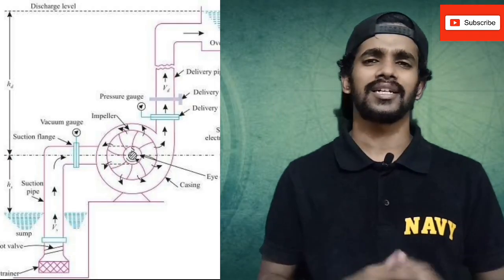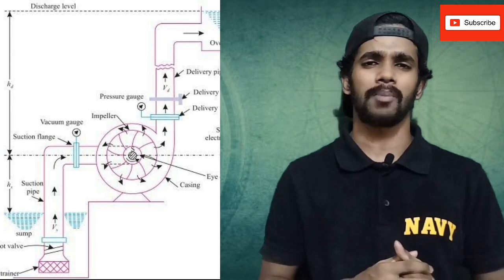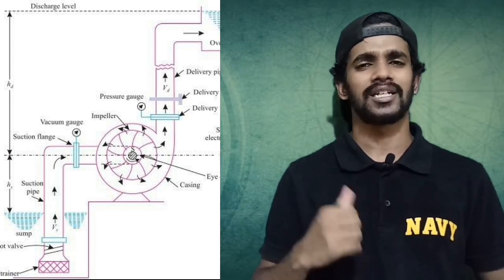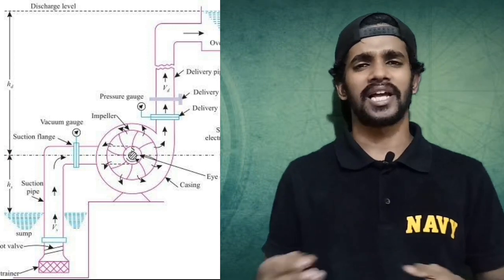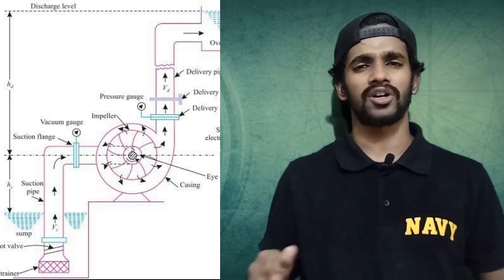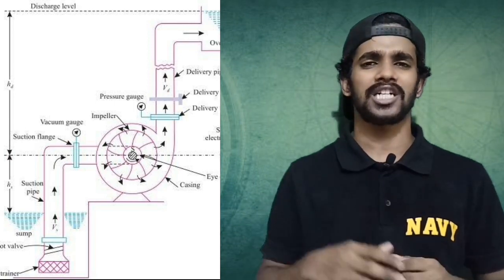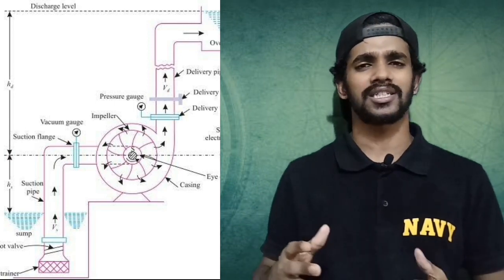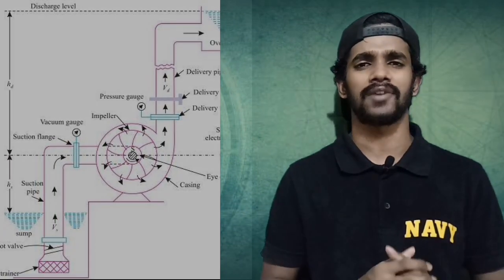On the right-hand side you can see the centrifugal pump. As you already know the basic components of the centrifugal pump: the volute casing, the impeller, the place from where it takes suction — that is the sump — the water level, the suction pipe, and a discharge pipe. All such things are visible on the right-hand side.